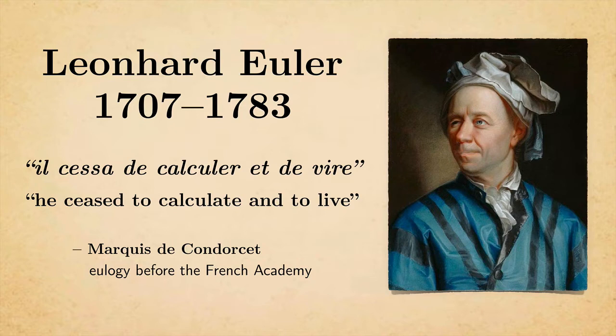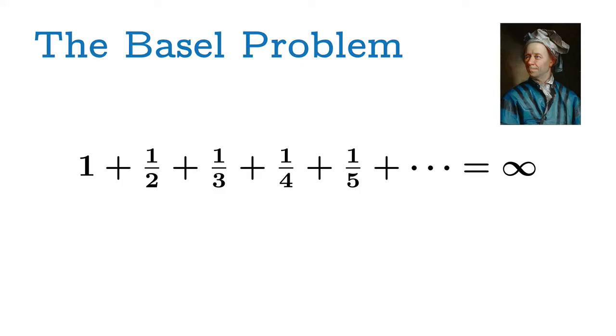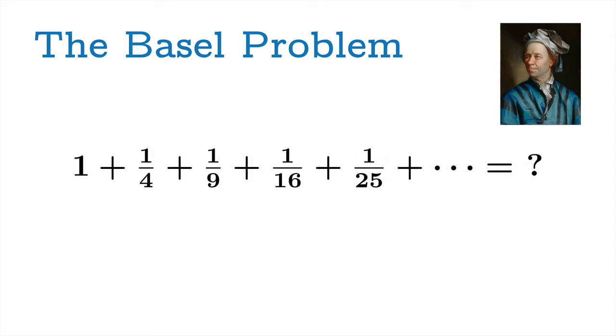And he proved in 1735 a remarkable theorem early in his career that really put him on the map mathematically. At the time it was known, Jacob Bernoulli had proved that the sum of the reciprocals of the natural numbers diverges, which is to say it adds up to an infinite quantity. This was known, and the natural next question to ask is what if you just isolate out the squares? What if you reciprocate the squares and try to add those up? What would you get?